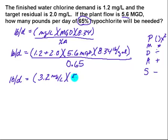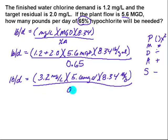Times my 5.6 MGD, times the 8.34 pounds per gallon, and that's all going to get divided by the percent of available chemicals. There's my 0.65.